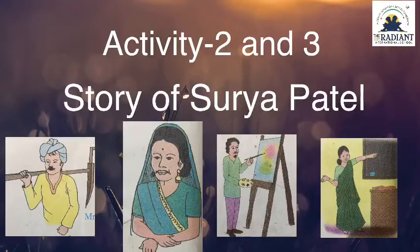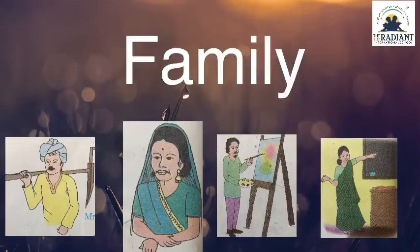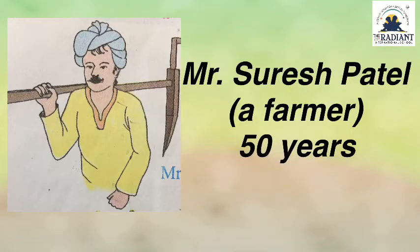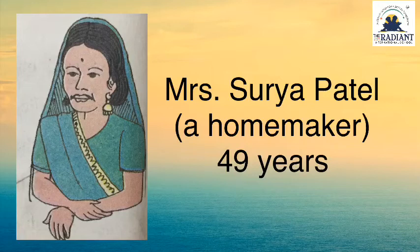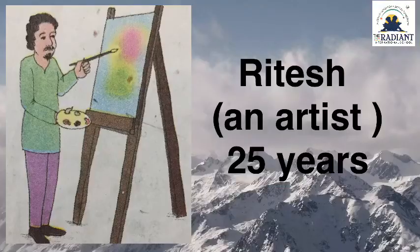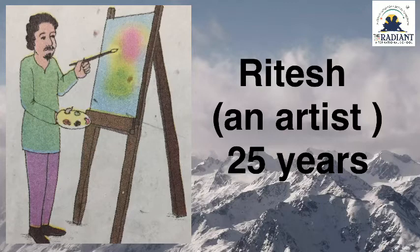Activity 2 and 3 — Story of Surya Patil. Aa picture chhe Mr. Suresh Patil, ae farmer chhe. Hemnī umar chhe 50 varsh. Aa picture chhe Mrs. Surya Patil, ae home maker chhe, itleke gare kaam kare chhe. Hemnī umar 50 varsh chhe. Aa picture chhe Ritesh, ae Surya Patel no son chhe, ek artist chhe. Heni umar 25 varsh chhe.